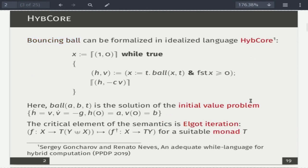So what would be a suitable language to write programs like this? We proposed a very simplistic DSL language called HybCore in the previous work. So, for example, the bouncing ball can be written like this, just like a while loop, and the condition of the while loop is true, so it runs forever. But of course we don't mean that all such programs are equivalent because there are very many different kinds of diversions.